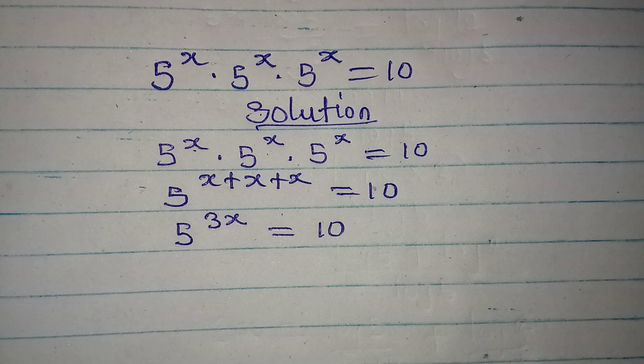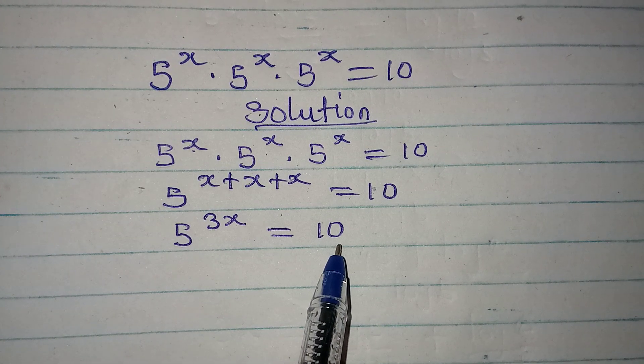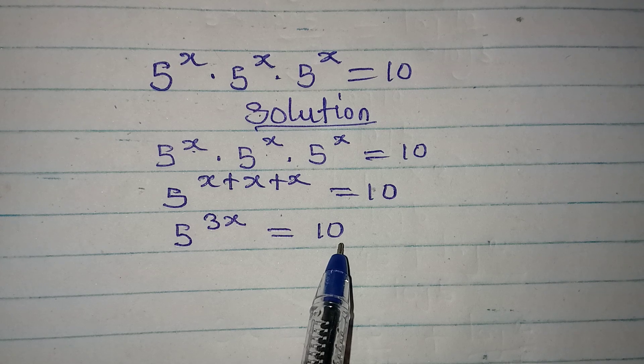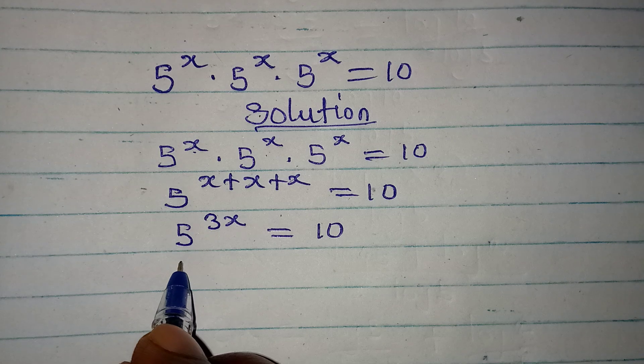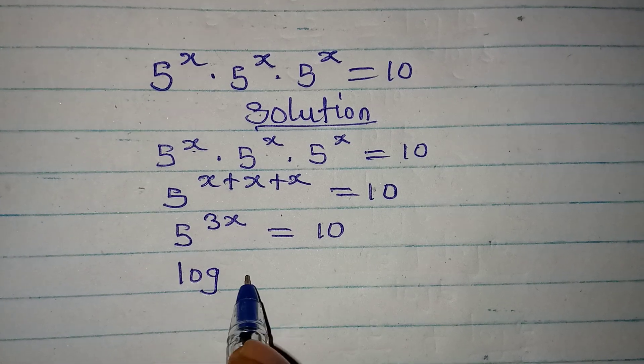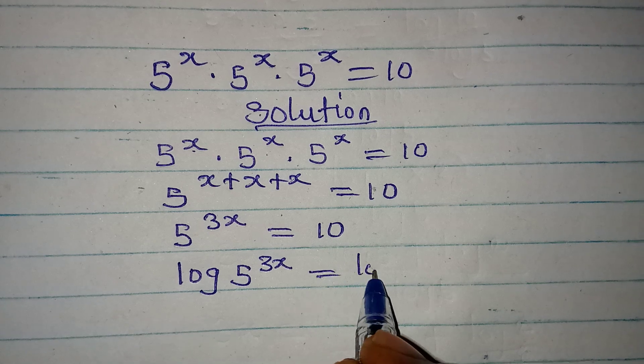Now this would have been very easy for us if we can write 10 in index form to have 5 as the base. It's not possible. That means we need to introduce log. Log 5 to the power of 3x equals log 10.